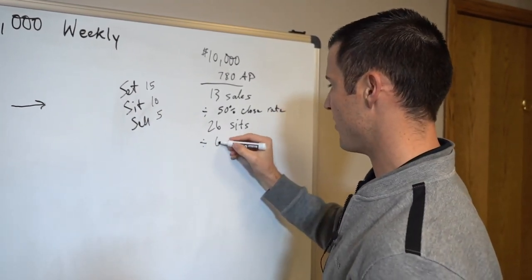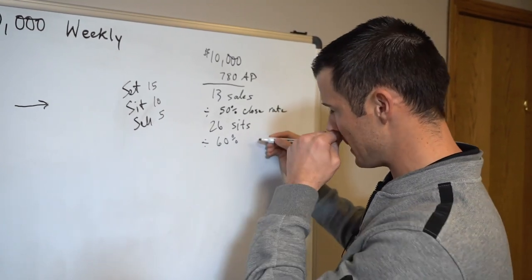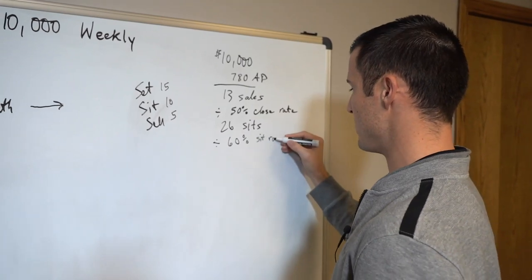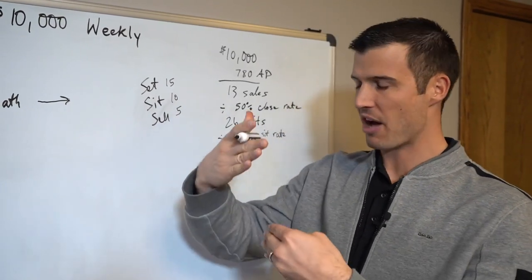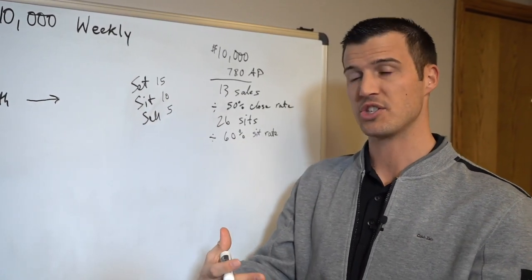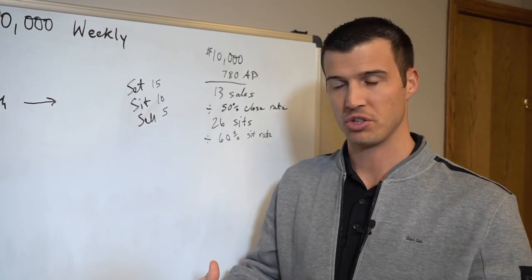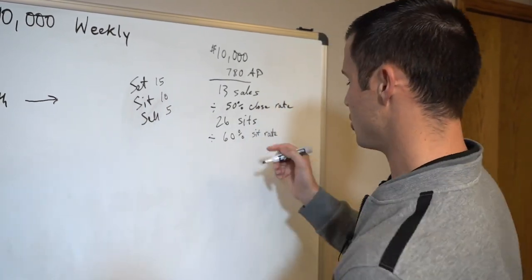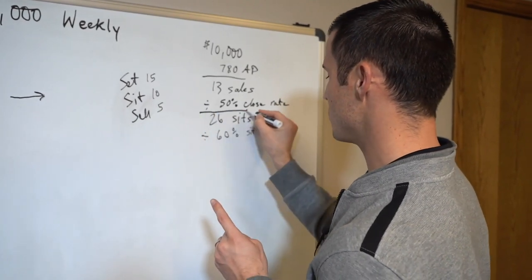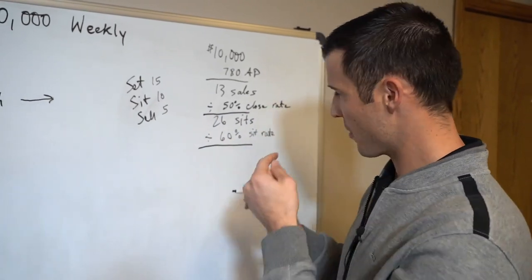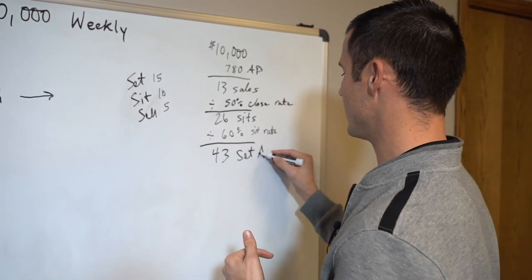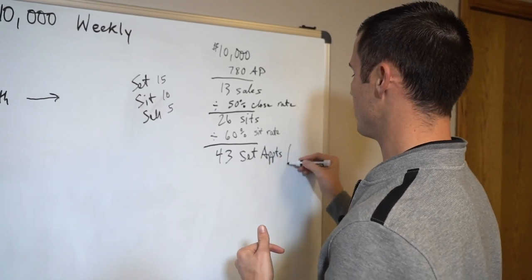Now if you divide it by a 60% sit rate, which means if you set 10 appointments, about six would actually show up. Some would port you or stand you up, forget, et cetera. So when you divide it by 60%, that takes you to 43 set appointments per week.